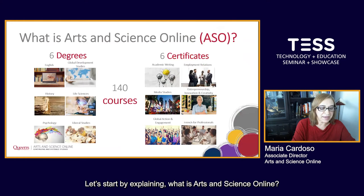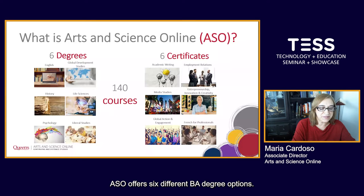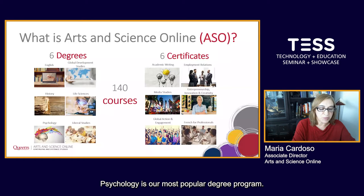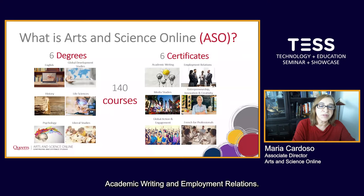Let's start by explaining what is Arts and Science Online — what is ASO? We are part of the Faculty of Arts and Science at Queen's University. ASO offers six different BA degree options: English, Global Development, History, Life Science, Psychology, and Liberal Studies. Psychology is our most popular degree program. We also offer six different certificate options, the most popular being Academic Writing and Employment Relations.